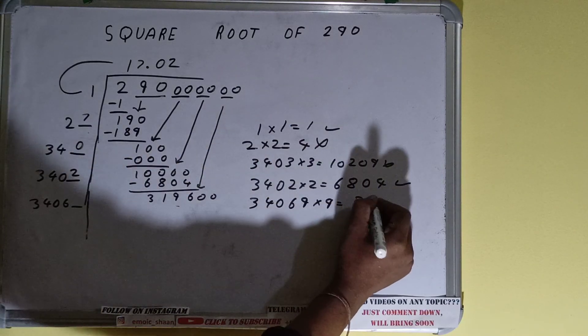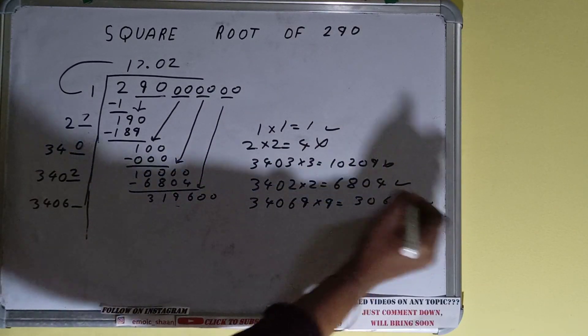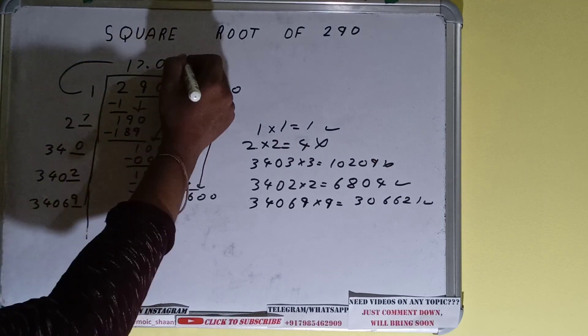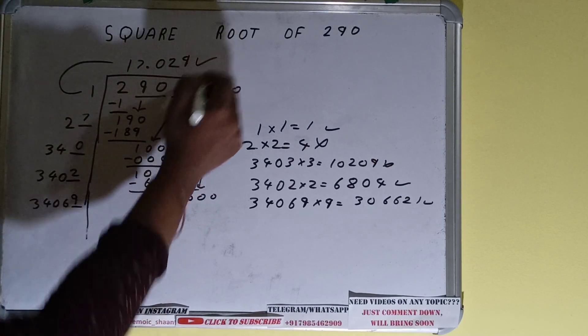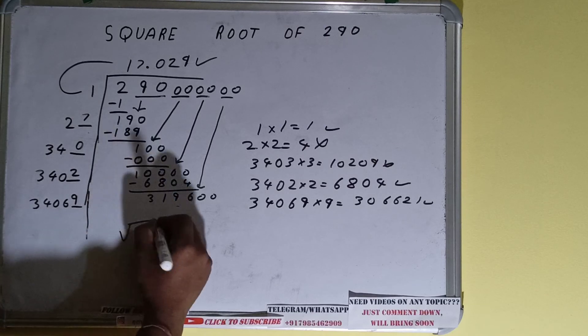It will be 306,621 which is good to take. So nine here and nine here, but we don't need to calculate because we got the answer correct up to three decimal places. So square root of 290 will be 17.029 and that will be the answer.